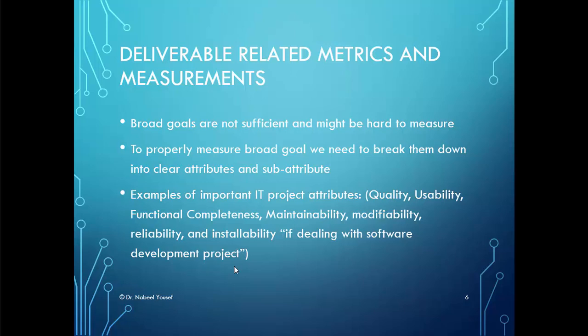Looking at deliverable-related examples, we can find that quality, usability, functional completeness, maintainability, modifiability, reliability, and installability — which is for software development only — are all considered deliverable-related metrics. If these attributes are hard to measure, we can break them down to sub-attributes and attach the proper metric to each one.